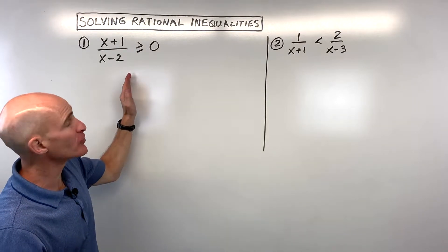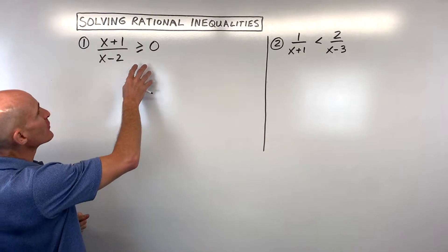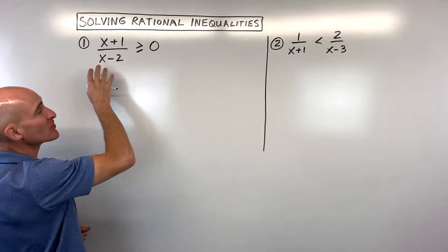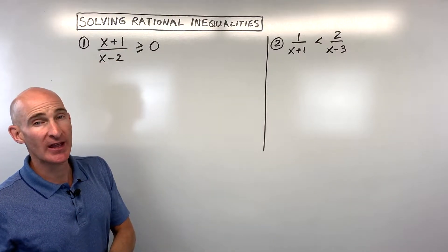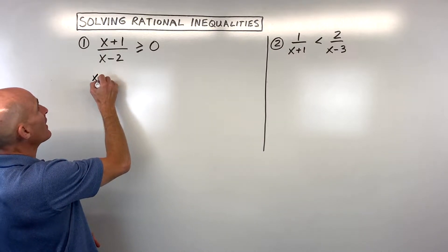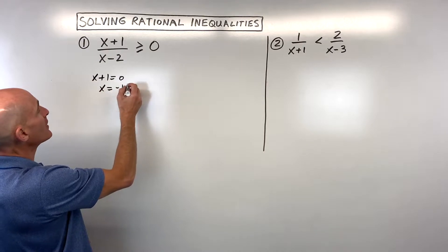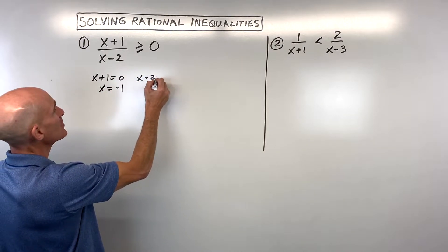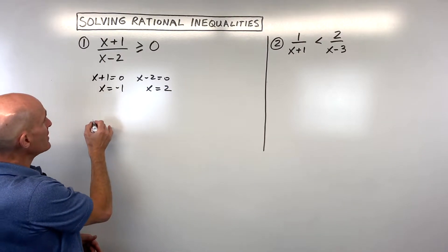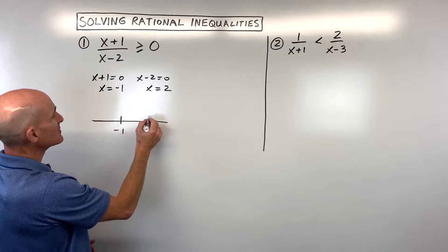We're going to go through three examples. Let's start with the first one. The first thing is to get everything on one side, set it to zero. Then you factor the numerator and denominator as much as you can, and you set those factors equal to zero. So x plus one equals zero means x is equal to negative one, and x minus two equals zero means x is equal to two. Now we go to the number line and plot these numbers from lowest to highest.